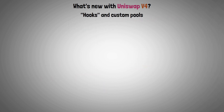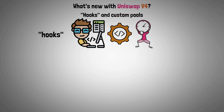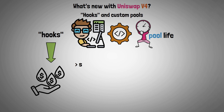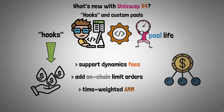Hooks and Custom Pools. Hooks let programmers add code that executes predetermined actions at significant times during the life of the pool. For instance, hooks can be included to enable liquidity pools to natively support dynamic fees, add on-chain limit orders, or function as a time-weighted average market maker to disperse large orders over time to reduce price impact.